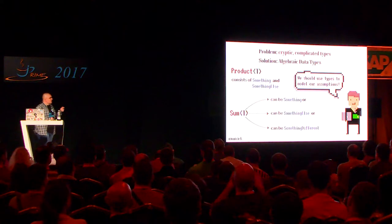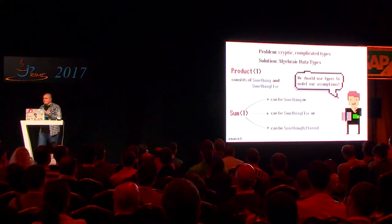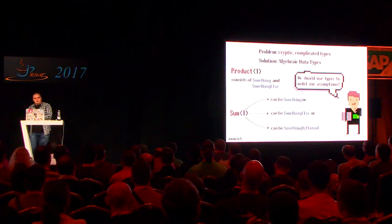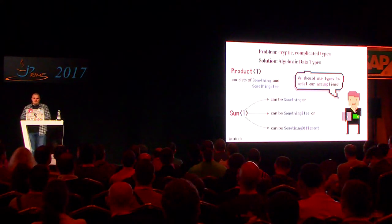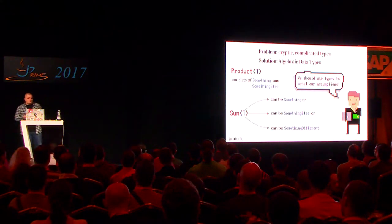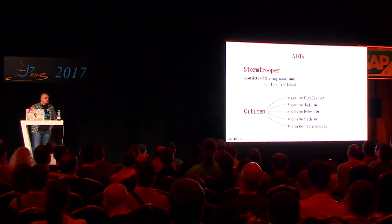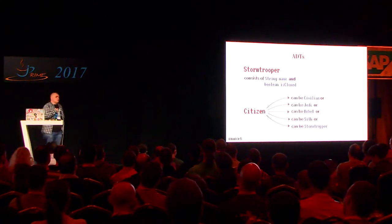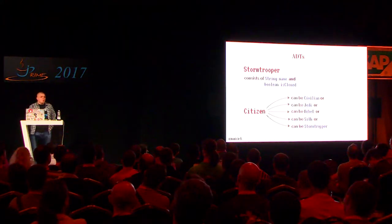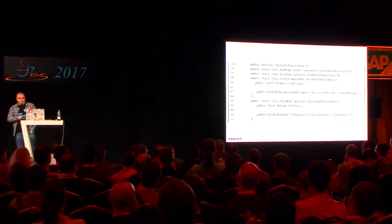An algebraic data type is a very simple concept — it's a sum type or product type. A product type is a type that consists of several types, for example a class with String, Boolean, and Integer. A sum type is more similar to an enum — it can be either one type or another type. They can be mixed together. We have already seen some examples of ADTs: Stormtrooper is a product type of String and Boolean, and Citizen is a sum type because it can be either Civilian, Jedi, Rebel, Sith, or Stormtrooper — but not two things at once. Try and Option are also sum types.